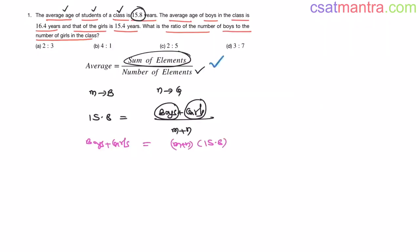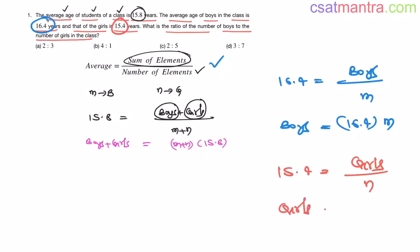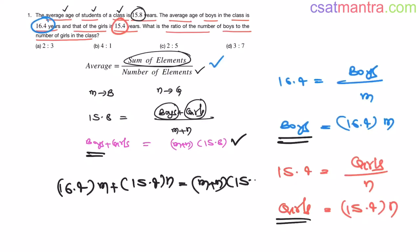This is sum of ages of all boys and this is sum of ages of all girls. So sum of their ages is m plus n into 15.8. Now let's apply the same formula for boys average. Boys average is 16.4, that equals sum of ages of all boys divided by number of boys, which is m. So boys equals 16.4 m. Similarly for girls, girls average is 15.4 equals sum of ages of all girls divided by number of girls. Girls equals 15.4 into n.